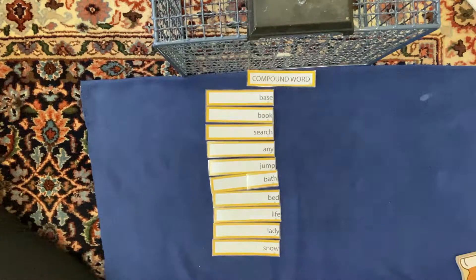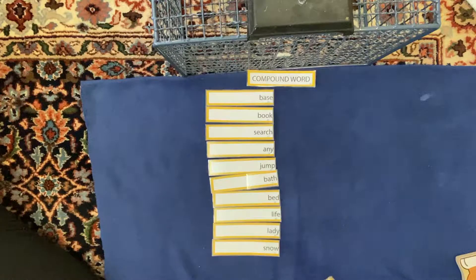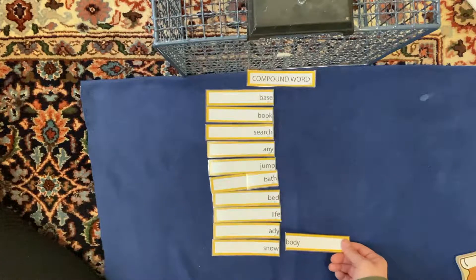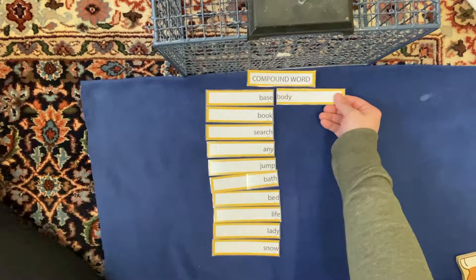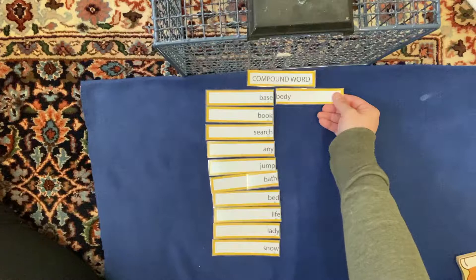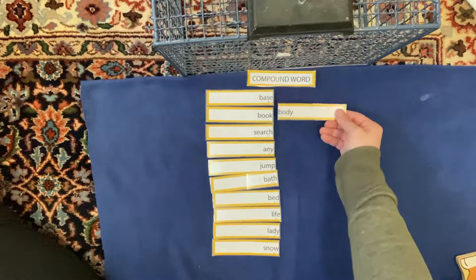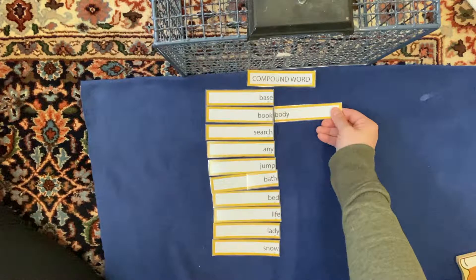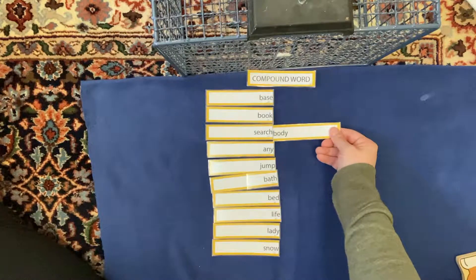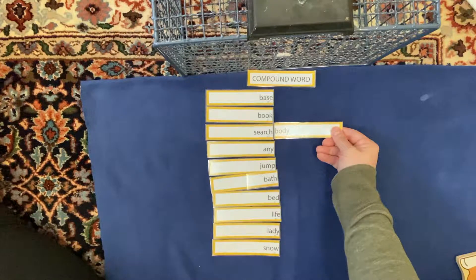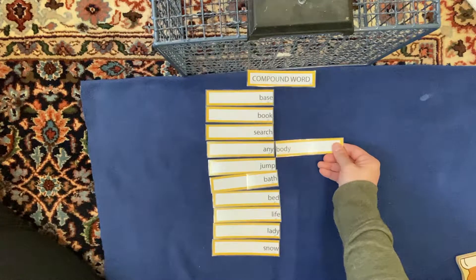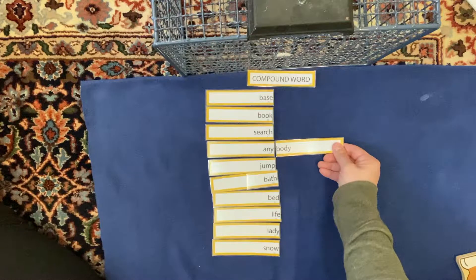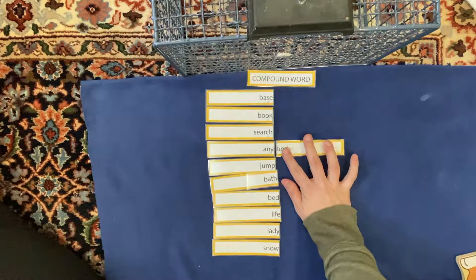Okay, so what about the word, we're going to try to put these second words with the first words and see if it makes sense. Base body. No, I don't think I've ever heard that word, have you. Book body. Be weird, but I don't think so. Search body. Anybody. Wait, anybody. Does anybody ever heard of the word anybody? Oh my goodness. Let's leave that one there because that sounds right.